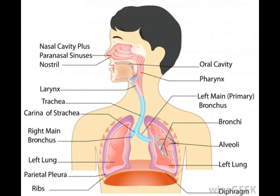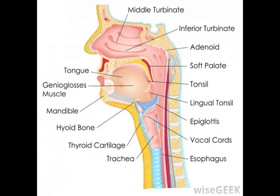The human cranium consists of 21 bones and is subdivided into the neurocranium, or brain case, which surrounds and protects the brain, and the splanchnocranium, which supports the structures of the face.